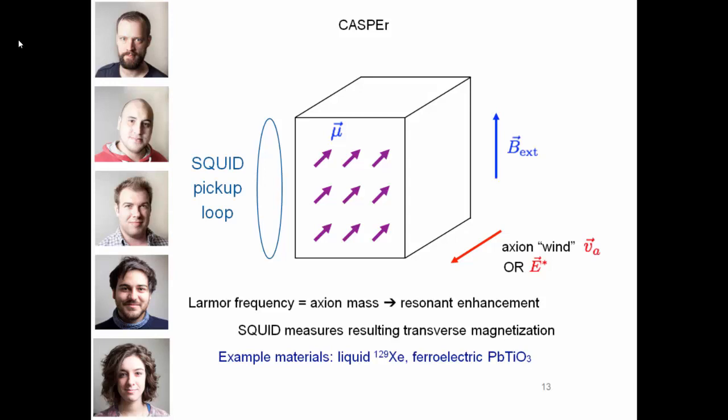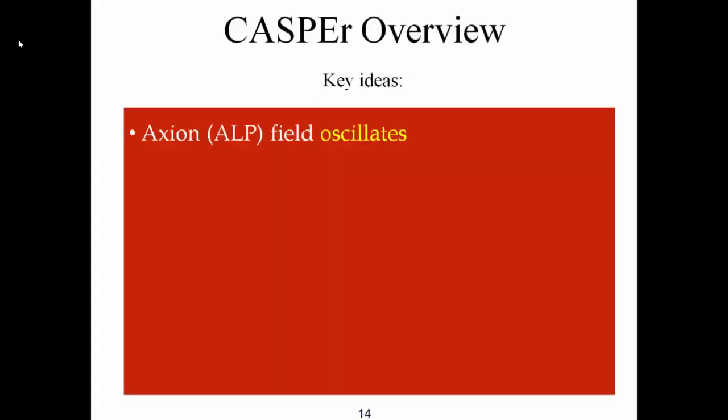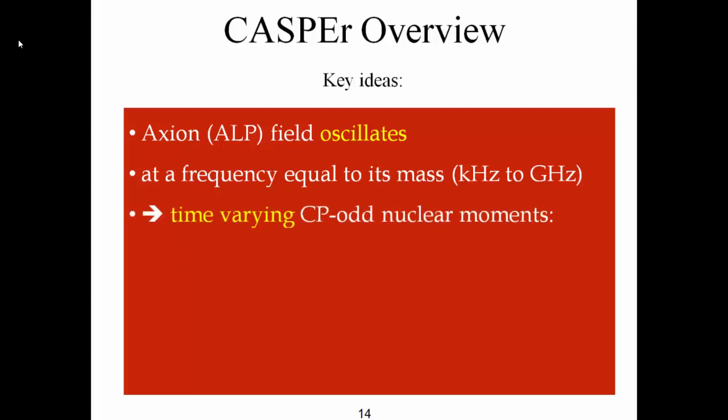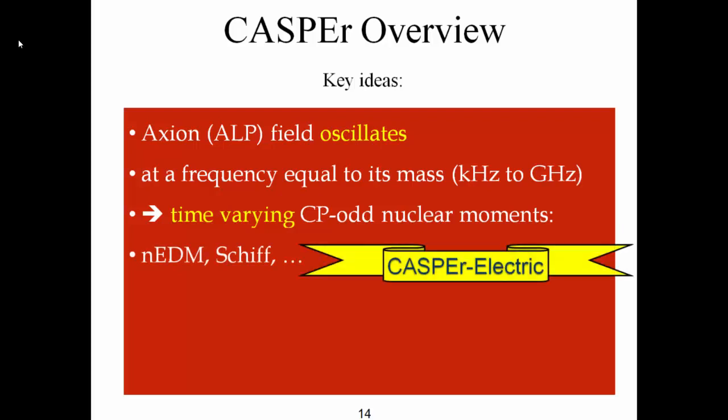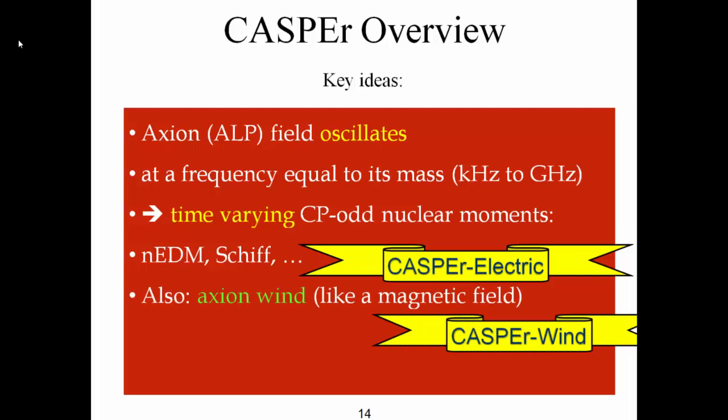Now, these two different types of couplings require somewhat different samples. At Mines, we work with hyperpolarized Xenon-129, and in Boston, for the CASPER electric experiment, we use solid state ferroelectric materials like, for example, lead titanate. So just to recap some of the basic ideas: we are looking for oscillating axion or axion-like particle fields. They oscillate at the frequency given by the mass of the axion, and the ranges we are talking about is from kilohertz to gigahertz. The electric coupling leads to CP violating nuclear moments such as nuclear electric dipole moment, and this is searched by the CASPER electric experiment at Boston. And they also interact through the derivative interaction, and that's the axion wind experiment, and this is happening in Mines—it's the CASPER wind experiment.